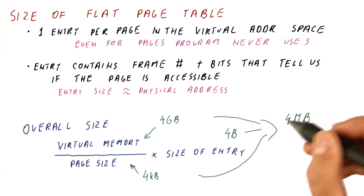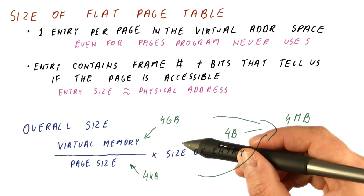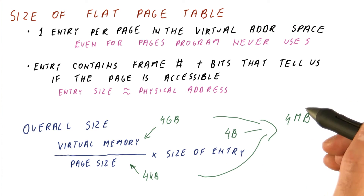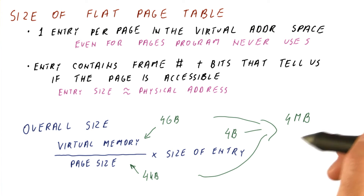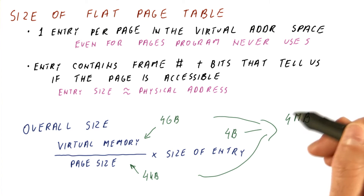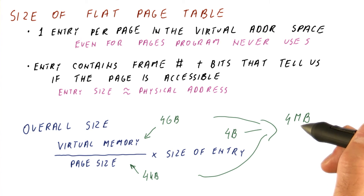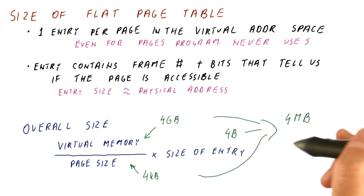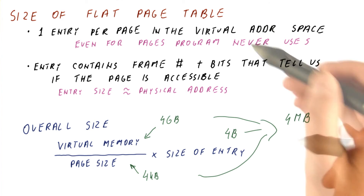Note that a process might actually be using less than 4 megabytes of actual virtual memory, because most of the pages are unused in such a process. Yet the page table still needs to be 4 megabytes.